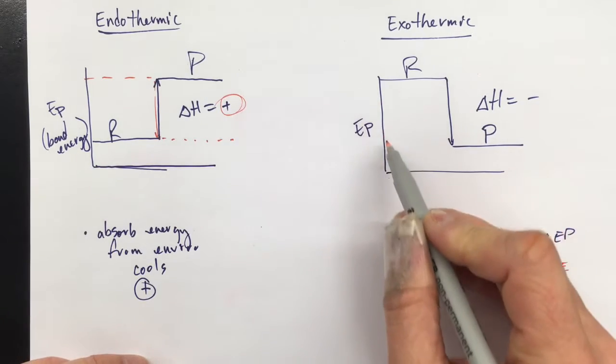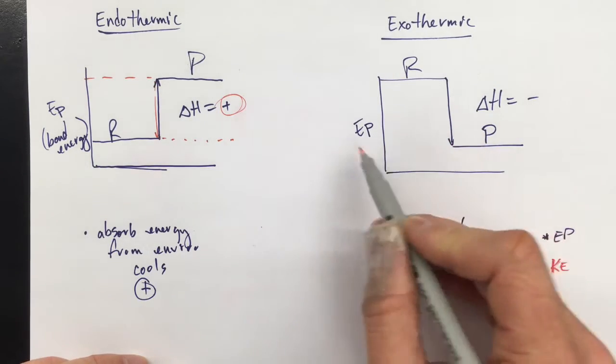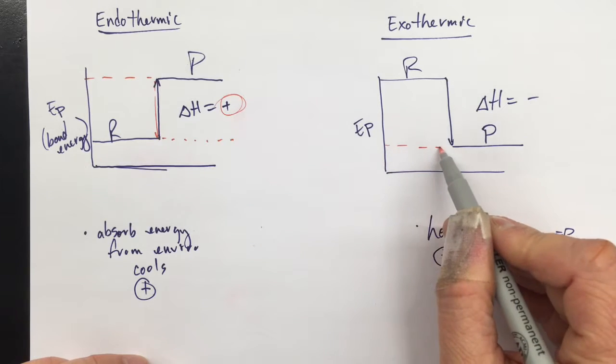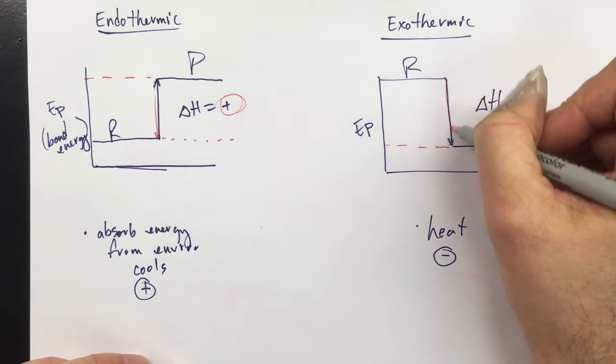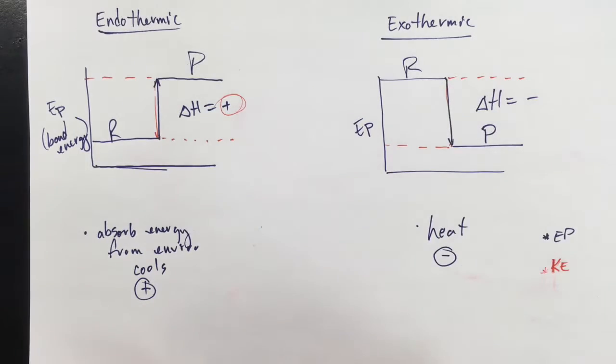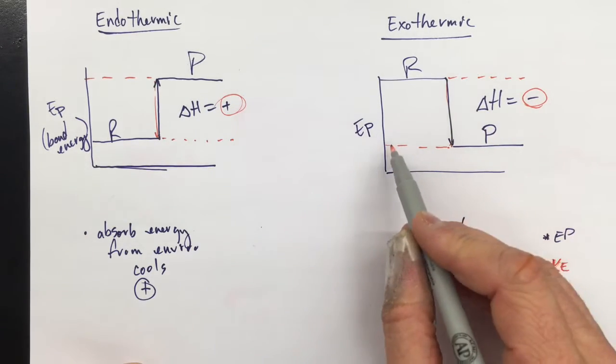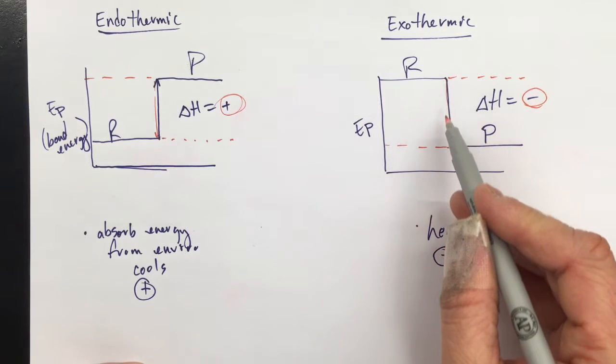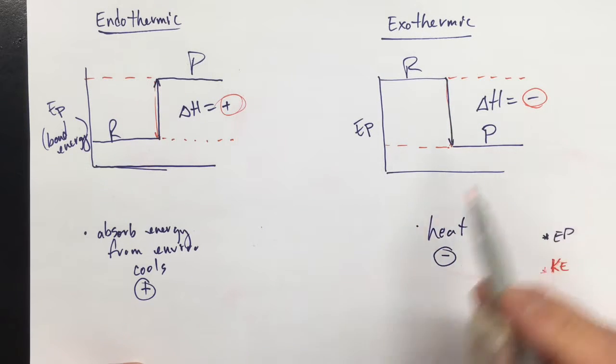Whereas here, we're giving off potential energy, we've got less potential energy, so the kinetic energy of the environment is going to go up. The environment is heated, because this potential energy is being given off.